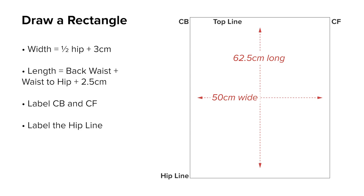Label the down lines as CB for center back and CF for center front. The bottom line is the hip line.